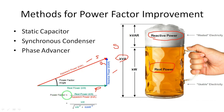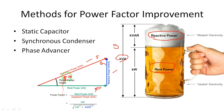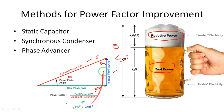In the power triangle, real power is indicated by P, reactive power by Q, and the algebraic sum of these two vectors is called apparent power, indicated by S. From this triangle we can write the power factor formula: power factor equals cos theta, which equals real power divided by apparent power. That is kilowatts divided by the square root of kW squared plus kVAR squared, which equals kVA.